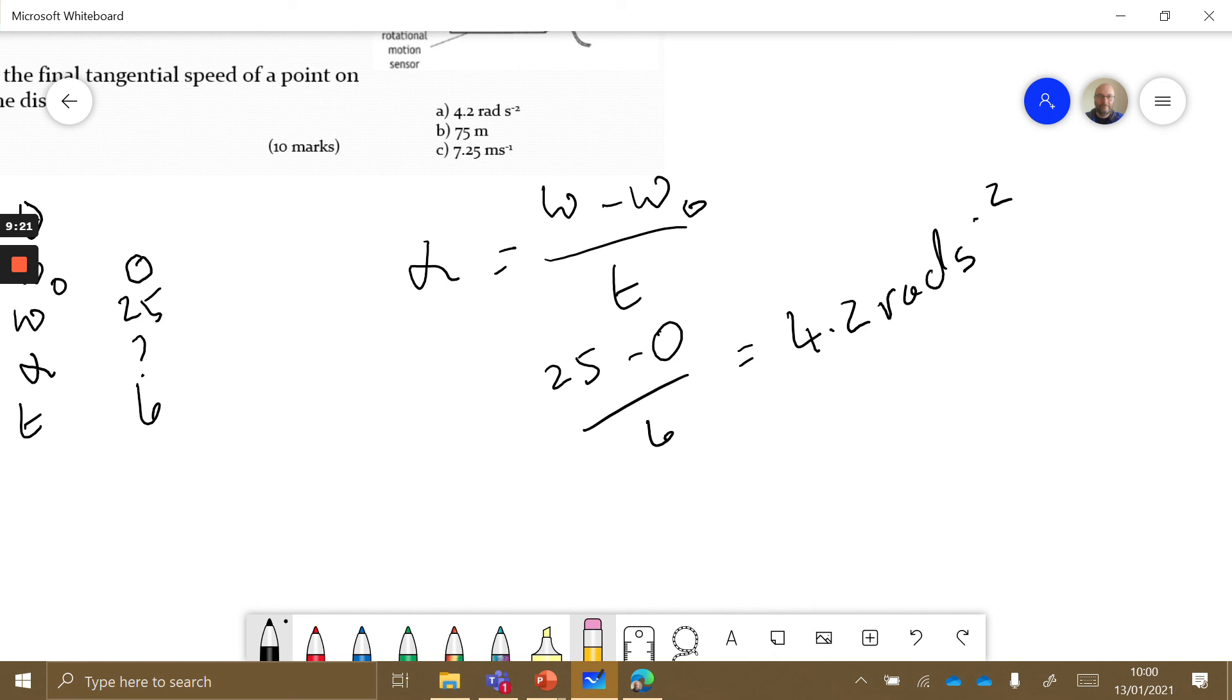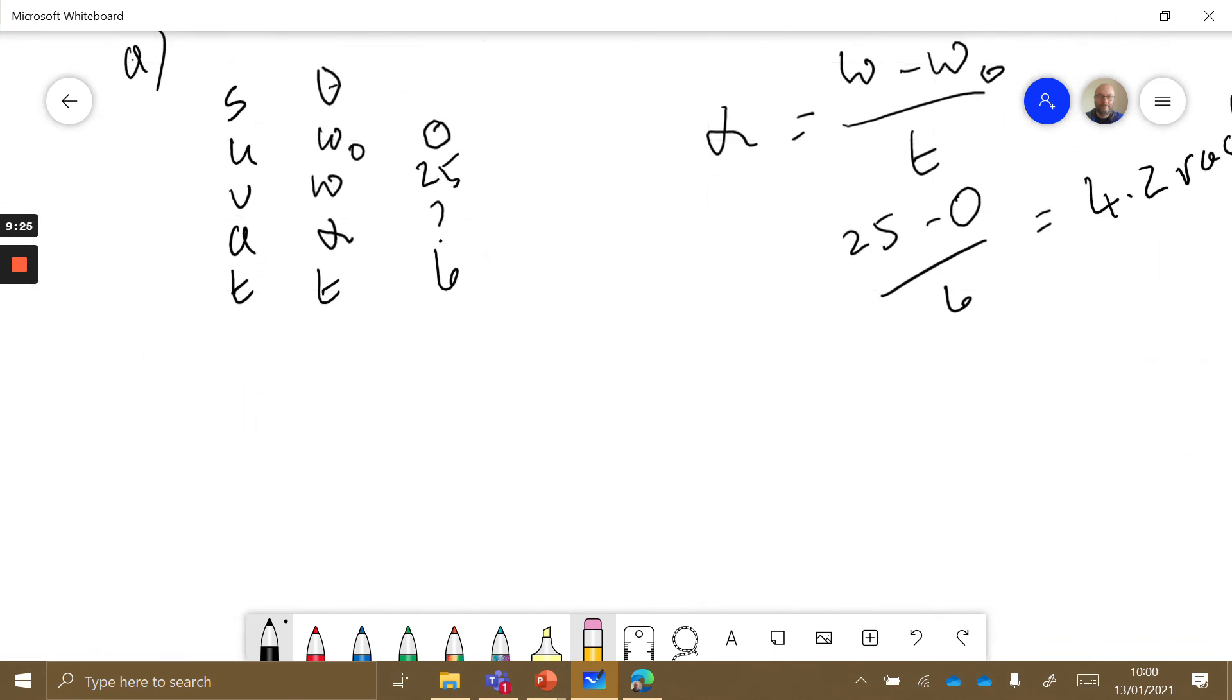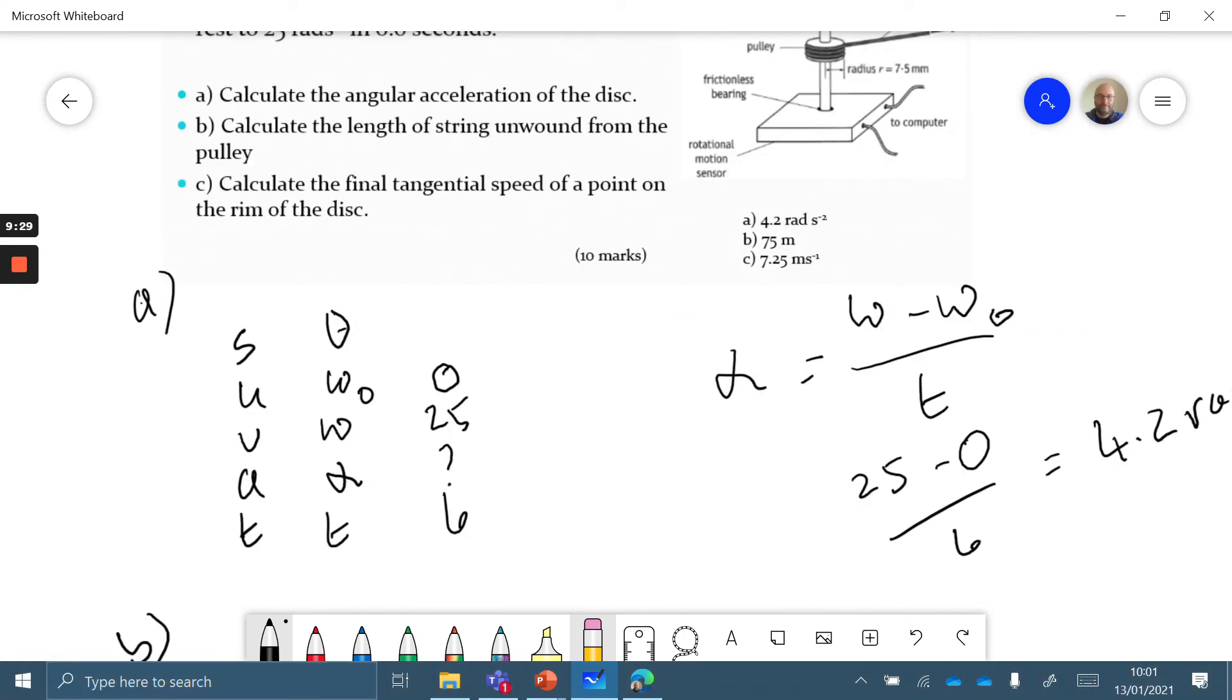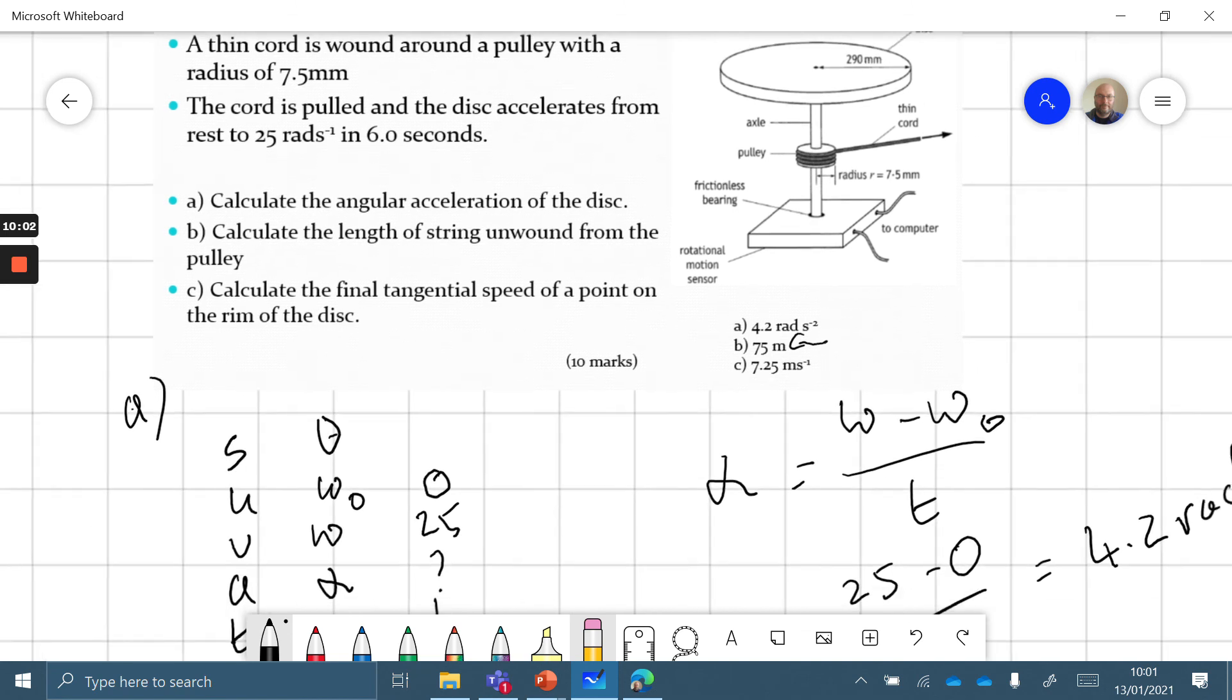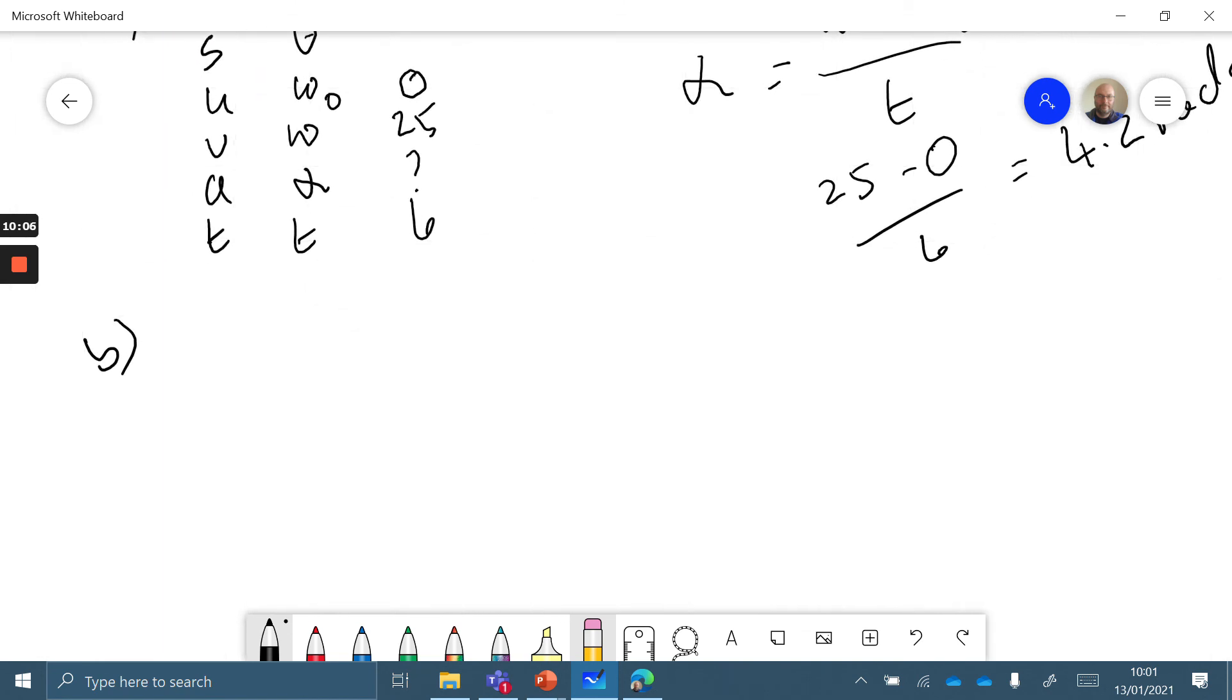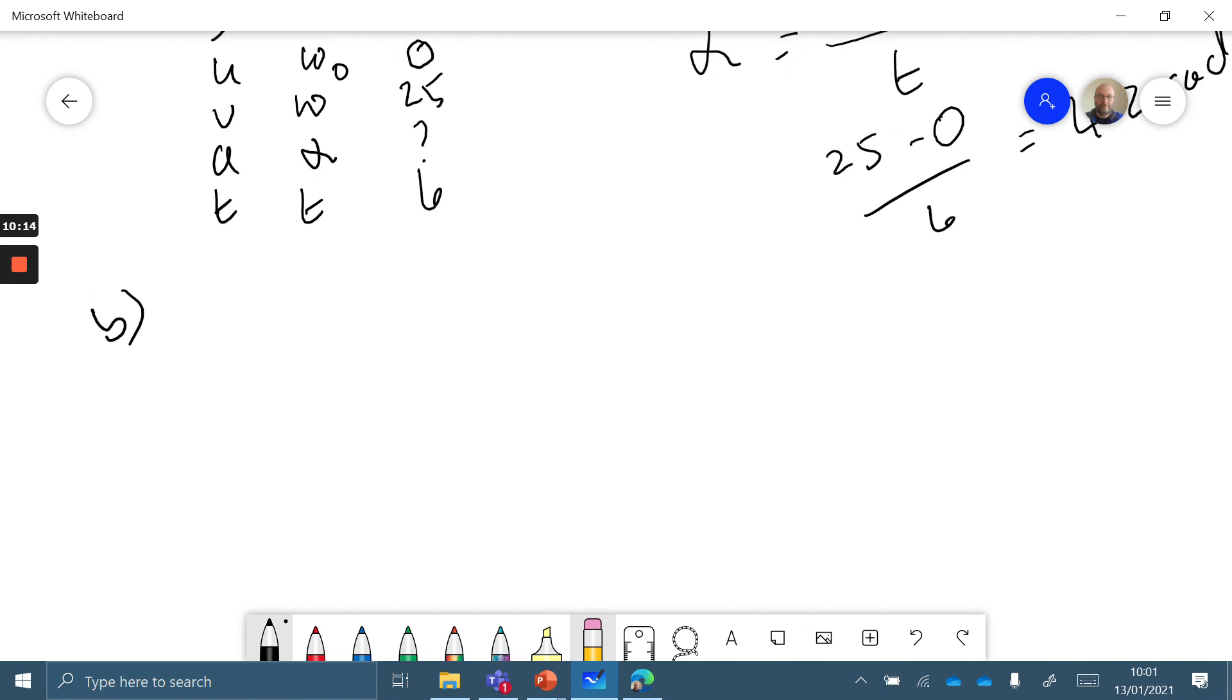Now, units - what do we reckon the units are of alpha? We didn't really discuss that, did we? Well, linear acceleration is meters per second to the minus two. Funnily enough, angular acceleration is radians per second to the minus two. Excellent. Part B was calculate the length of string unwound from the pulley. At this point you may be looking at the PowerPoint and noticing the answers are here - this one's wrong. Let's have a look at it. Before I go back to do my work, I'll point out that the length of string is wrapped around this pulley wheel. This pulley wheel has a radius of 7.5 millimeters, so the pulley wheel has the same angular acceleration as the disc but it has a smaller radius, so we have to factor that in when we're looking at our length of string.